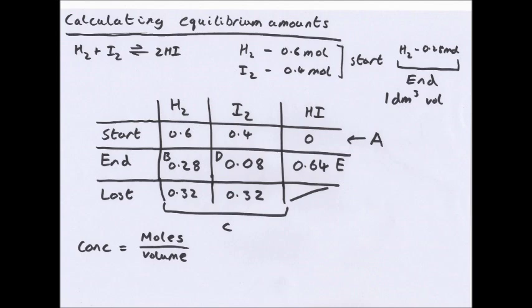Now remember, most of all things, this is in moles. You want concentrations. In this case, it's 1 dm cubed. You've got the number of moles. Moles divided by the volume basically means that the concentration is equal to the moles, but just with a different unit. But remember, concentration equals moles divided by volume.